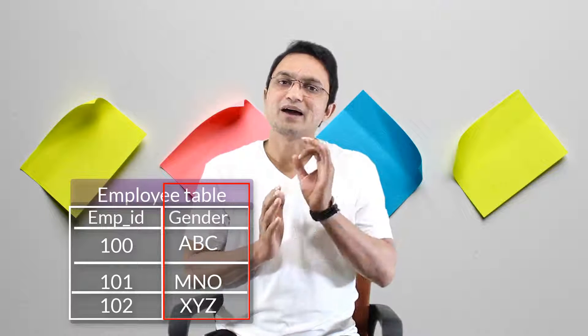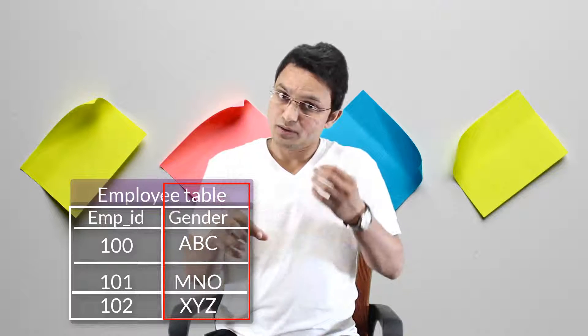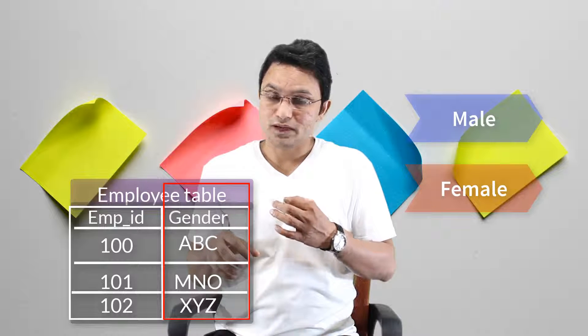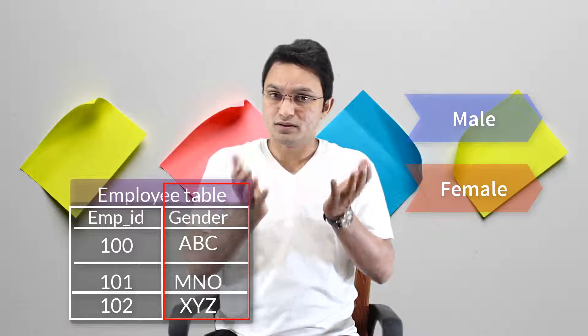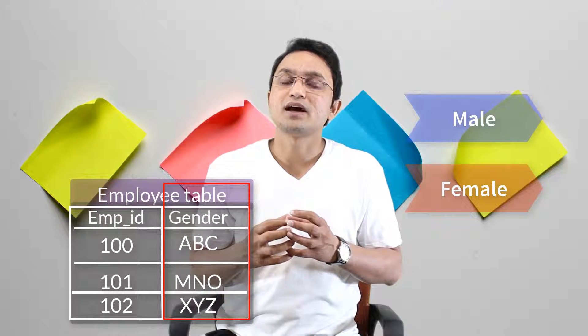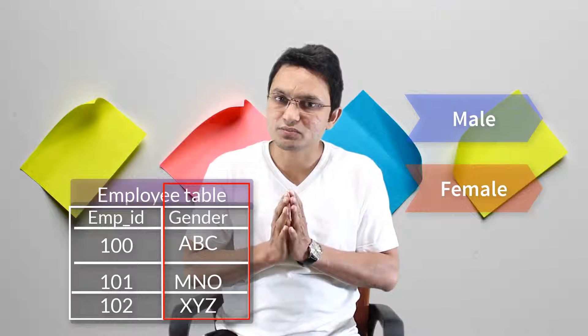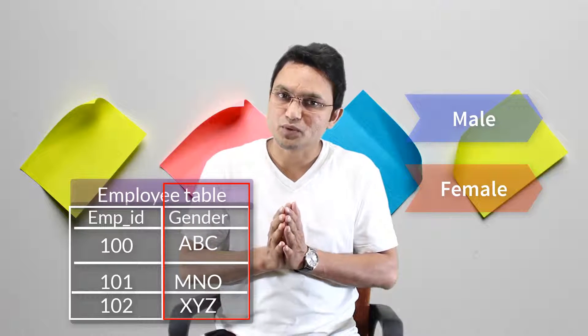Let's understand the check constraint with an example. Say you have an employee table with a gender column. This gender column has no constraint, meaning you can insert anything you want — you have no control over the data. But gender can only have two values: male or female. If you want to impose a rule that only male or female can be inserted, how do you do that?